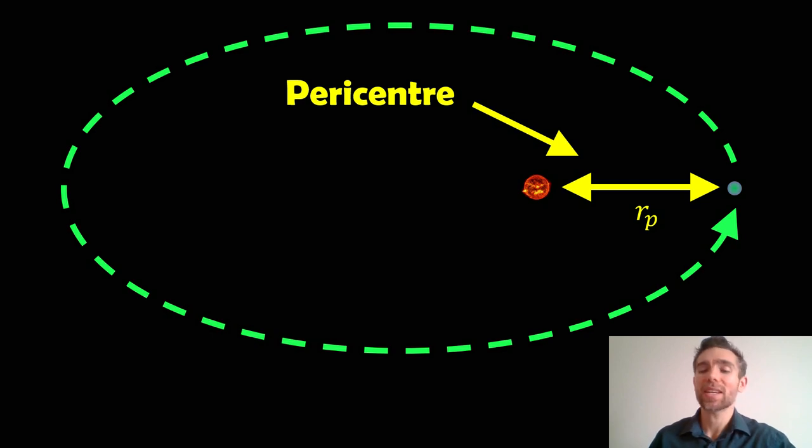But the pericentre is the shortest distance between the two objects on an elliptical orbit. Now, as they go round, they do change their distance, but at the shortest distance, that's the pericentre. And it's normally used as a reference point for a lot of the orbital elements.